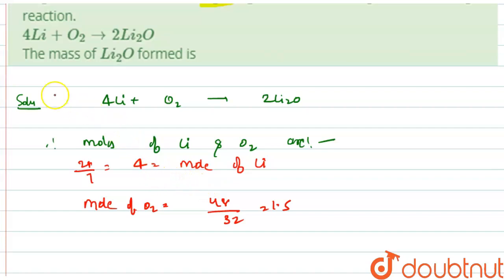For limiting reagent, we divide the moles by the stoichiometric coefficient. For lithium: 4 divided by 4 equals 1. For O₂: 1.5 divided by 1 equals 1.5.